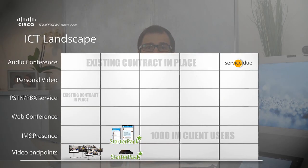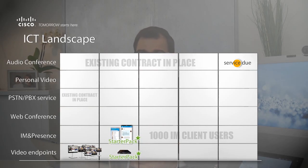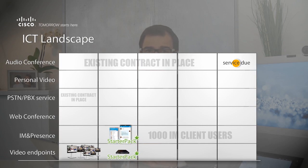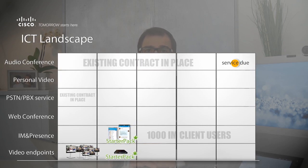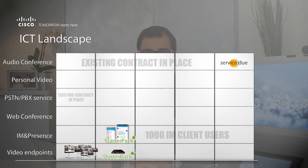The second starter pack offering is around instant messaging and presence. The BE6K comes with completely free of charge licenses for instant messaging and presence. This means that by deploying a BE6K, you get an instant messaging client for all your employees — everyone. This IM client works on Windows, Mac, iPhones, iPads, and Android devices. As an employee, you can have an IM client on your PC and one on your smartphone, at no cost at all.